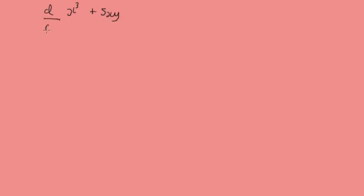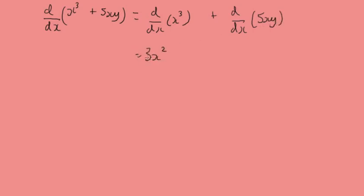Let's do another one. We've got x cubed plus 5xy and we want to find the derivative. That's the same as the derivative of just x cubed — nice and easy — plus the derivative of 5xy. The first part gives us 3x squared. For the 5xy part we use the product rule: u is 5x and v is y. So we get 5x times dy by dx, plus y times the derivative of 5x which is just 5.